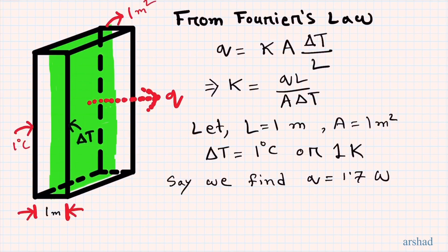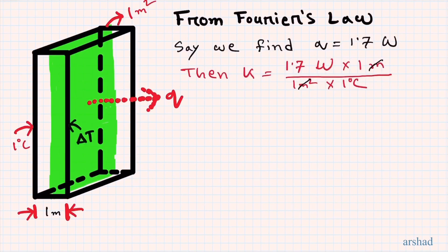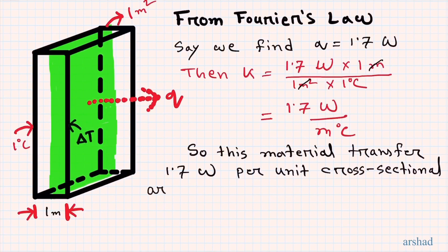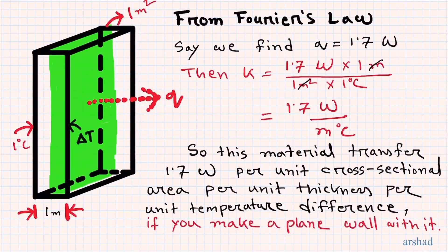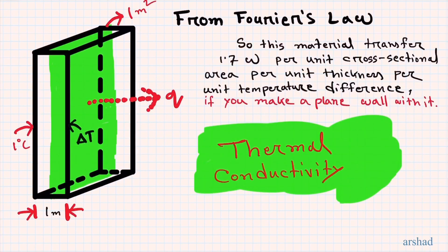Say we find that the amount of heat transferred was 1.7 watts. That means this particular material has a thermal conductivity K equal to 1.7 times 1 divided by 1 times 1, giving 1.7 watts per meter degree Celsius. This means the material transfers 1.7 watts per unit cross-sectional area, per unit thickness, per unit temperature difference, for a plane wall geometry.